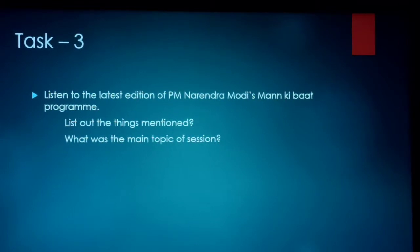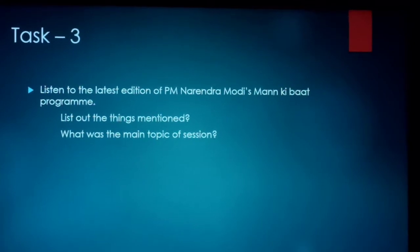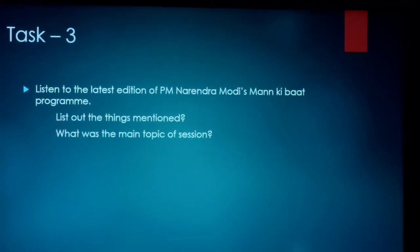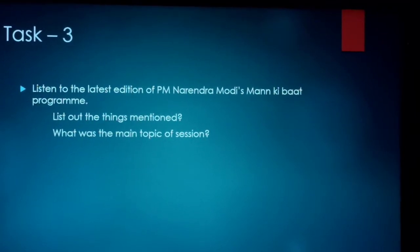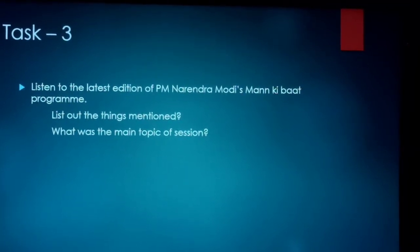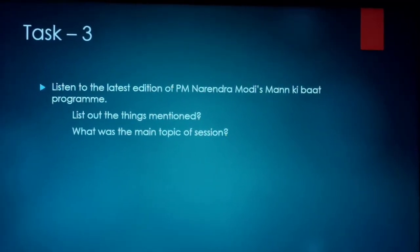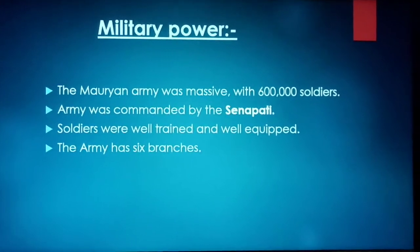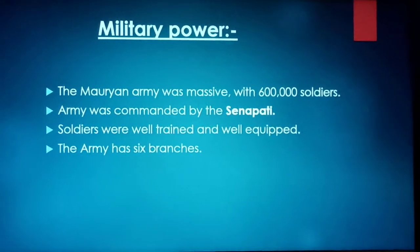Whenever the emperor went out into the public, he had great security around him so nobody could try to kill him. This shows that there was a very good army. So let's see about the military power of Chandragupta Maurya. When Chandragupta was ruling, he had a massive army with 6 lakh soldiers, and the army was commanded by the Senapati — the person who guided and gave commands to the soldiers.